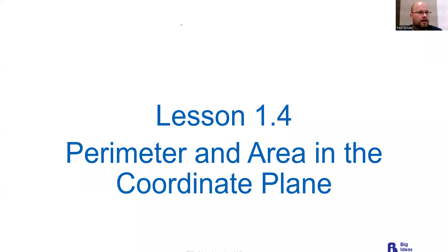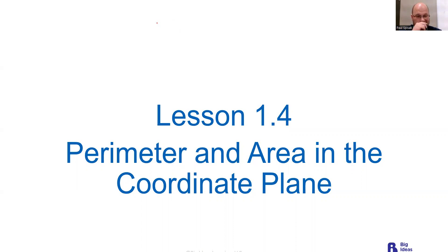We're looking at lesson 1.4: Perimeter and Area in the Coordinate Plane. This chapter is a little different as far as index cards for flashcards go, because there is no vocab box on any of the pages in 1.4. Most of the words I'm having you define are within this section, but you might want to use a glossary.